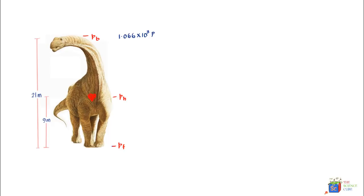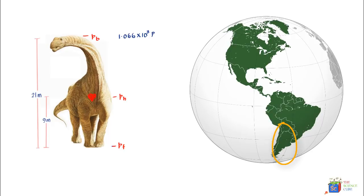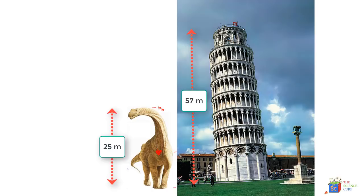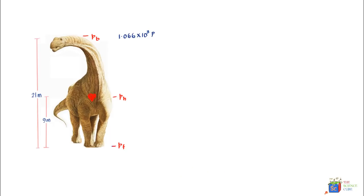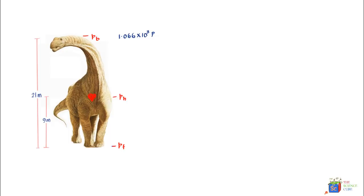In this problem we have an Argentinosaurus, an animal found in Argentina almost 97 million years ago. This is a huge animal that can grow to almost 25 meters and has a heart which can weigh up to 150 kilograms. The animal in this problem is about 21 meters in height and its heart is at a level of 9 meters above the ground. The pressure at the brain level is 1.066 × 10³ pascals, and we need to find what pressure should be generated by the heart so that the brain receives this pressure and the Argentinosaurus can roam freely.